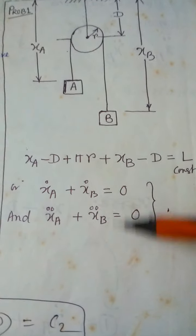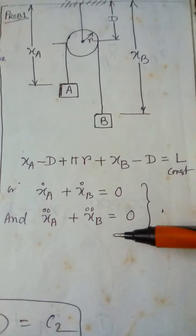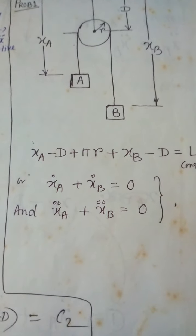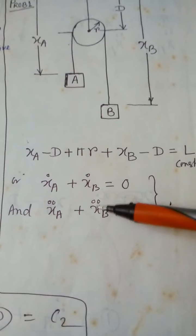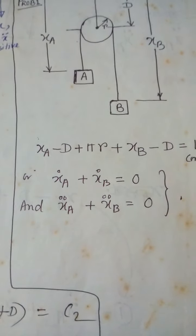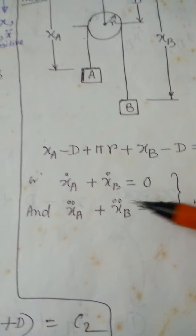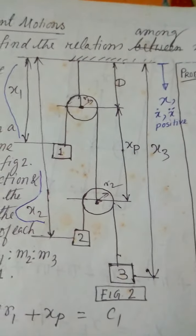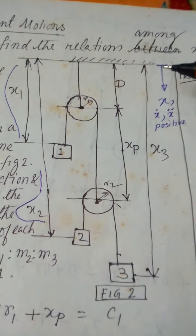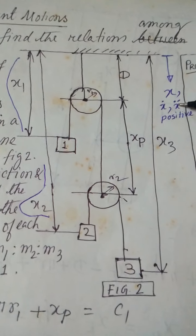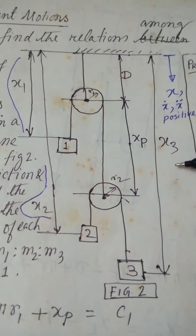This is a general method. If the weights of the two masses are given, you can find the numerical values of xa, xb, xa_dot, xb_dot, and all related quantities. Now let us look at the second problem. Note that x_dot and x_double_dot are taken as positive in each chosen direction.